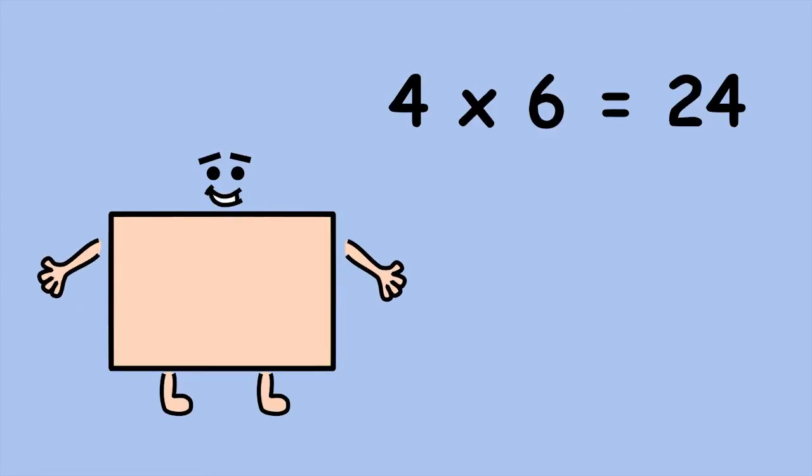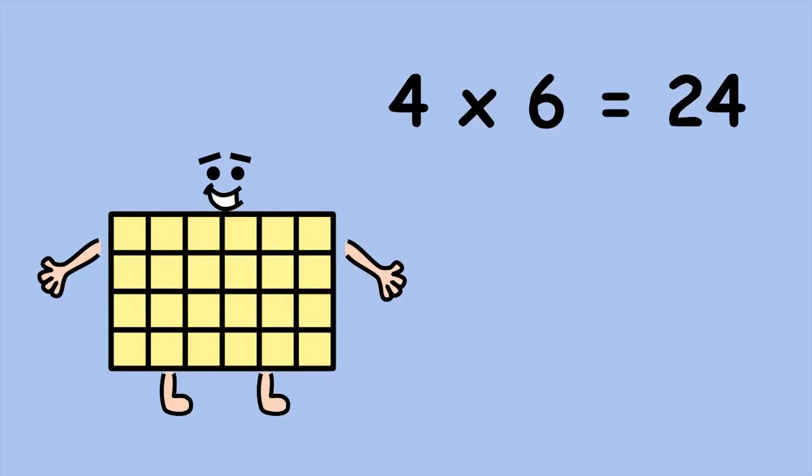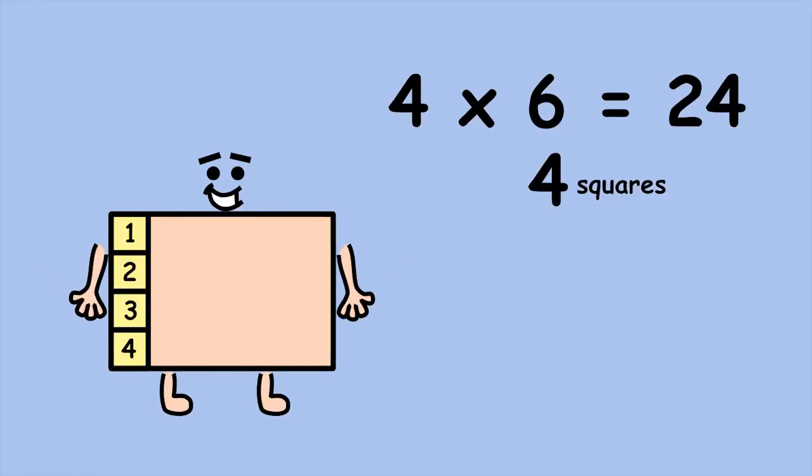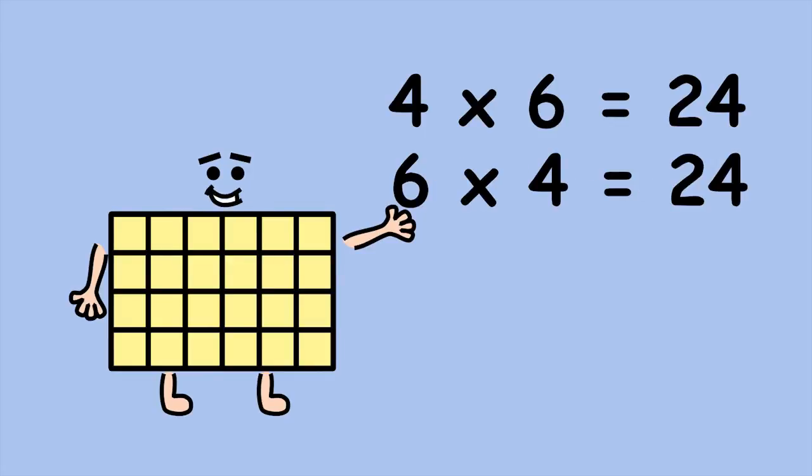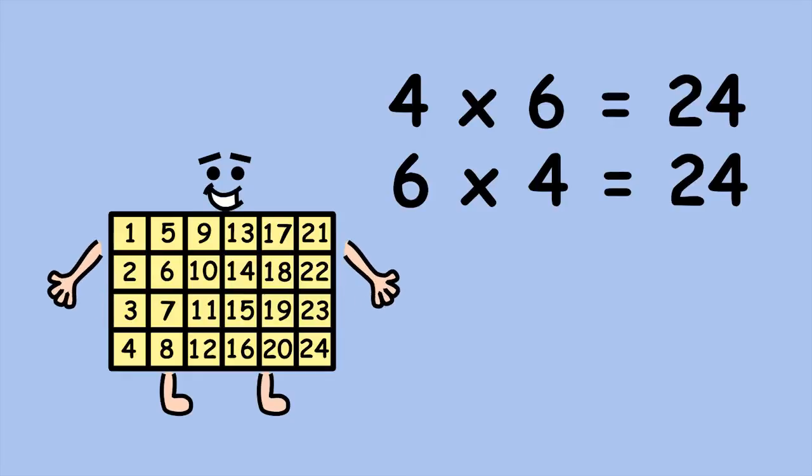If you don't like counting rows, you can count columns instead. There are four squares in a column. Now, how many columns are there? Six. Six groups of four, or six times four equals 24. Either way, you get the same answer.